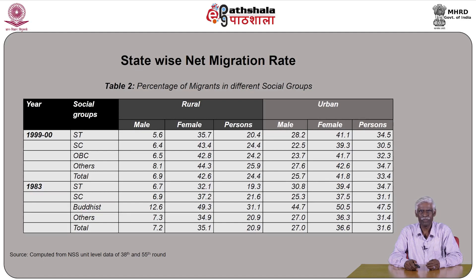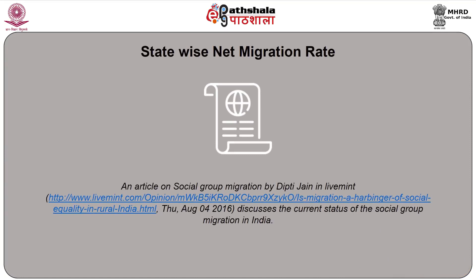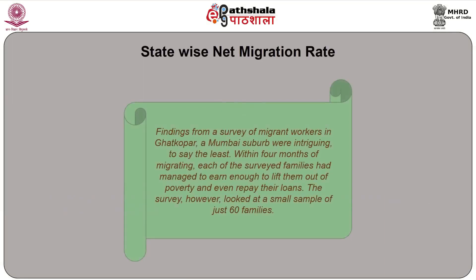The table depicts the percentage share of migrants in different social groups — ST, SC, OBC, and others — categorized under rural and urban, separately for male and female, for the years 1999–2000 and 1983. The source is computed from National Sample Survey unit-level data from the 38th and 55th rounds, published as an article on social group migration by Deepti Jain on livemint.com titled 'Is Migration a Harbinger of Social Equality in Rural India?' dated August 4, 2016.